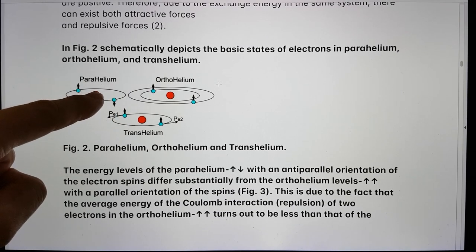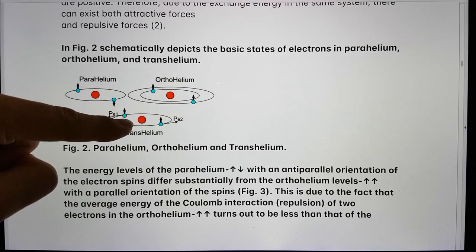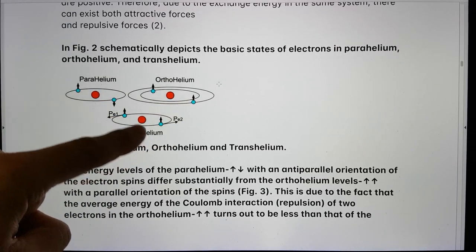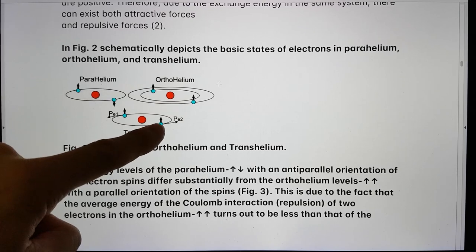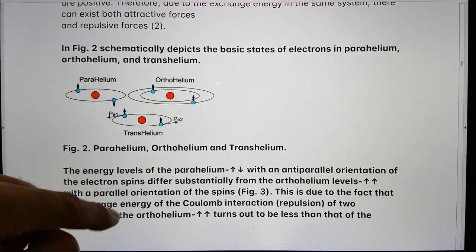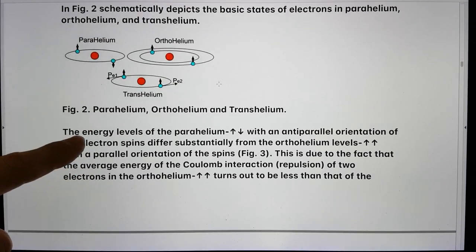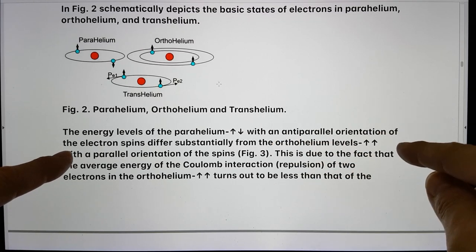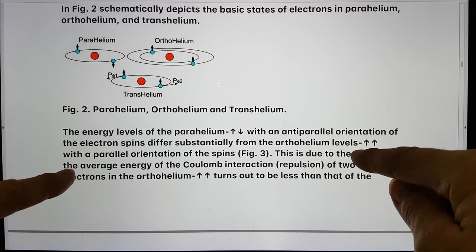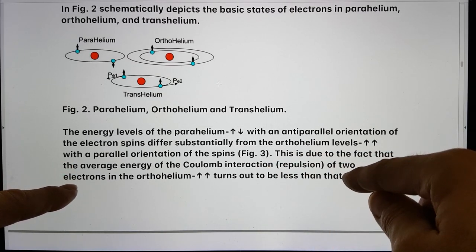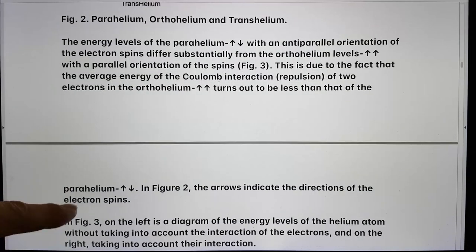So normal parahelium is here. Orthohelium is here, where the spins are up, down, and up, up, but in different orbits. But in transhelium, the spins are in the same orbit because they're socialized into the ground state orbit and in the same direction. Schematically, in figure 2, depicts the basic states of electrons in parahelium, orthohelium, and transhelium. The energy levels of parahelium, up, down, with an anti-parallel orientation of the electron spins, differs substantially from orthohelium levels with a parallel orientation of the spin. In figure 2, the arrows indicate the directions of the electron spins.